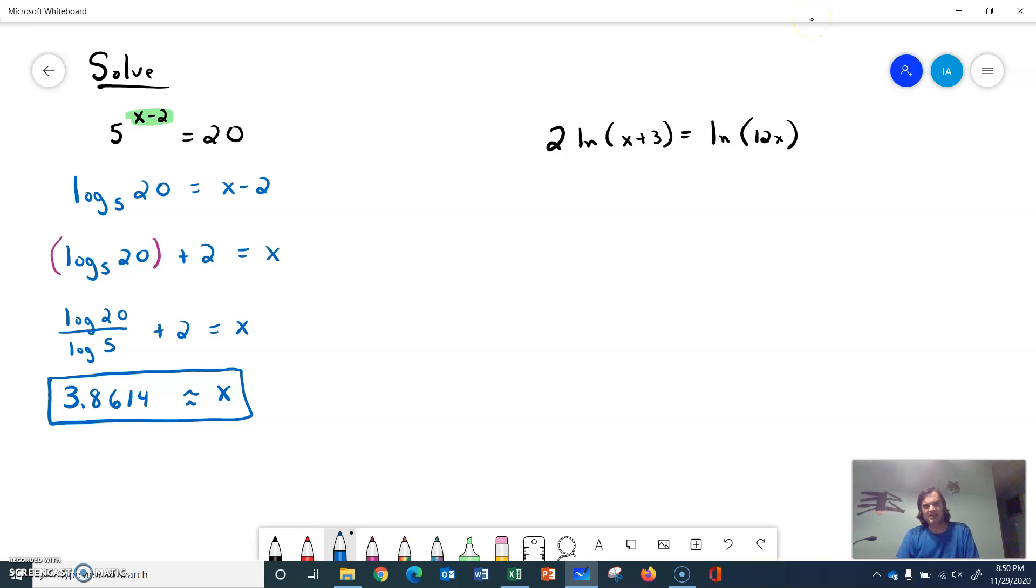The second problem over here is 2 times the natural log of x plus 3. And that's equal to the natural log of 12x. So don't mess up and try and divide these logs out because logs don't divide.